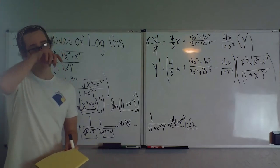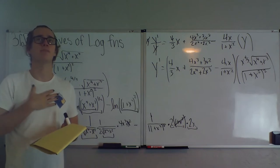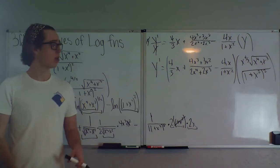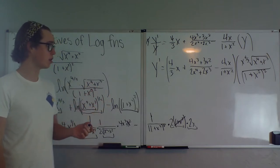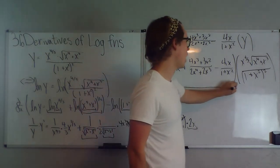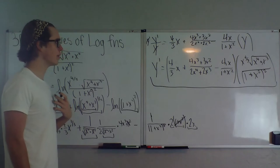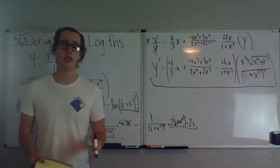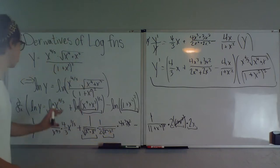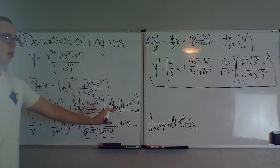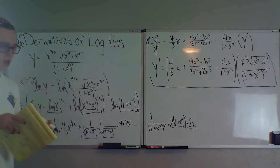Yes, that took a while, but doing multiple product rules and quotient rules would take even longer, and we actually get a fairly nice answer. That is how you do logarithmic differentiation: take ln of both sides, break your big log into small logs using log laws, and the differentiation goes much faster.